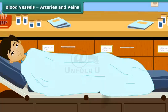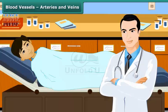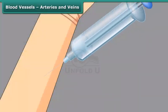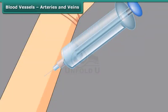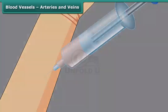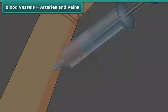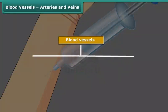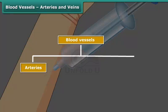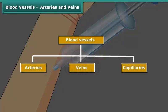Once when Rahul was unwell, his doctor recommended a blood test. The technician collecting blood samples first checks for a particular kind of blood vessel to prick and collect the blood. There are three types of blood vessels in our body: arteries, veins, and capillaries.